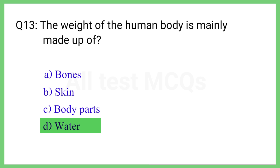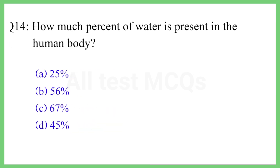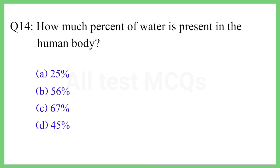Question No. 14. How much percent of water is present in the human body? The correct answer is Option C: 67%.